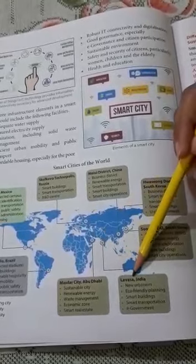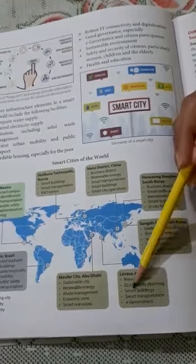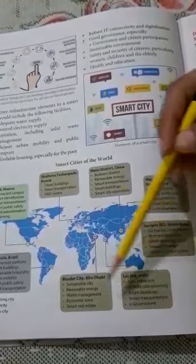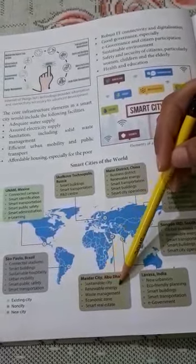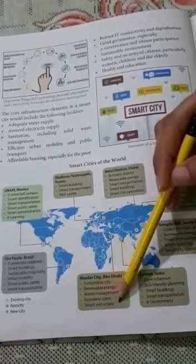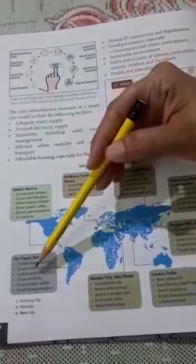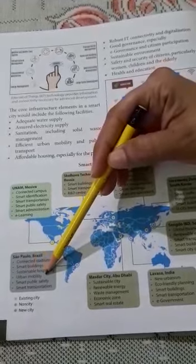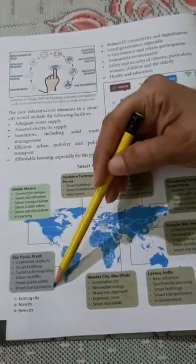Next is Lavasa in India, featuring new urbanism, eco-friendly planning, smart buildings, smart transportation, and e-government. Then Masdar City in Abu Dhabi, a sustainable city with renewable energy, waste management, economic zone, and smart real estate. And Sao Paulo in Brazil, with connected stadiums, smart buildings, sustainable hospitality, urban mobility, smart public safety, and smart transportation.